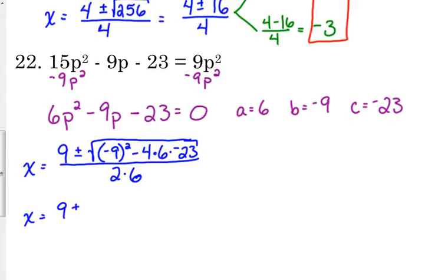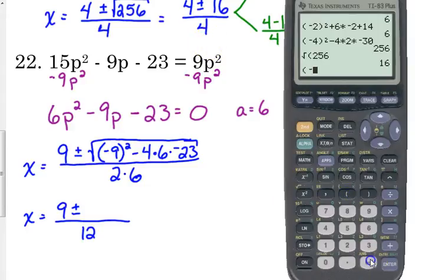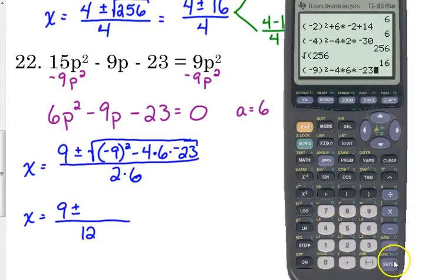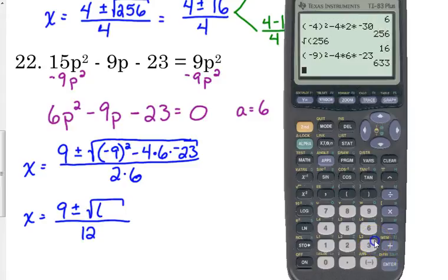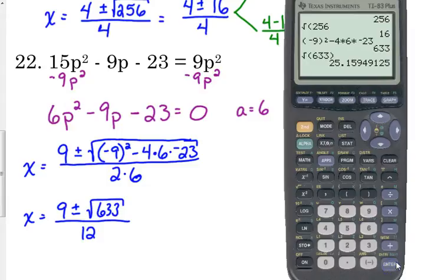Punching in the numbers: negative 9 in parentheses squared, minus 4 times 6 times negative 23 gives us 633. Always check it, but 633 is not a perfect square.